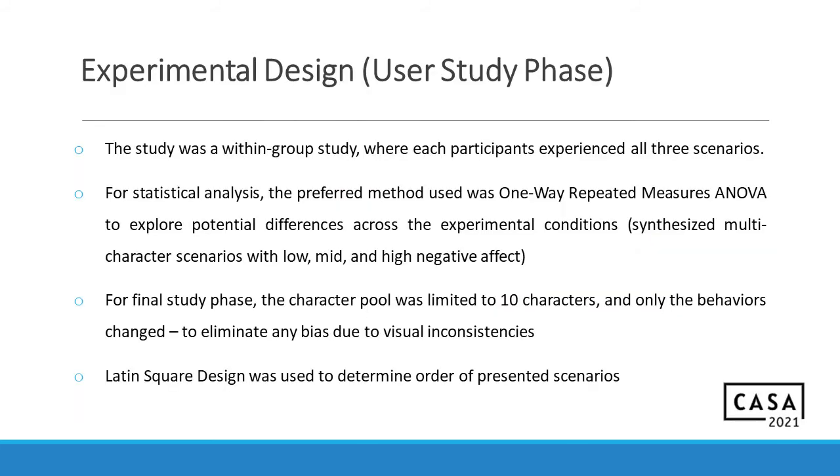Now let us take a look at the experimental design for the user study phase. This was a within-group study. So all participants were exposed to all three scenarios. For statistical analysis, we preferred the one-way repeated measures ANOVA. We wanted to explore the differences across all the three experimental conditions. And for the final study phase, the character pool was again limited to 10 characters. Just so as to eliminate any visual inconsistencies, we kept the characters the same. And again, Latin square design was used to determine the order of the presented scenarios.